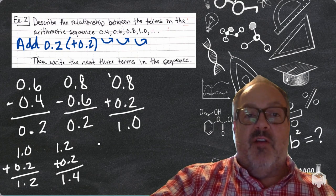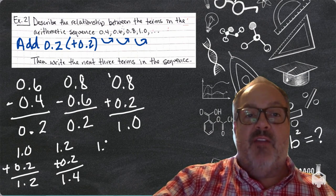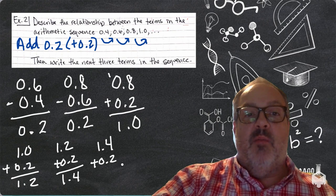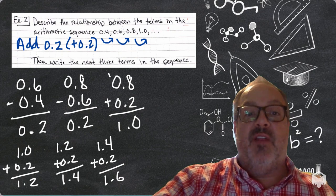And then finally start at 1.4, and add 0.2, and I'll get 1.6. Those are the next three numbers in this sequence.